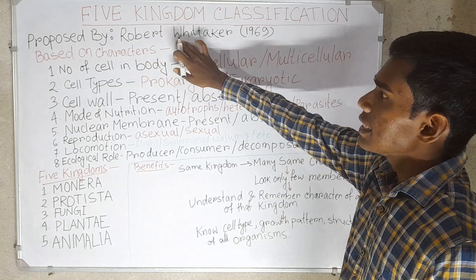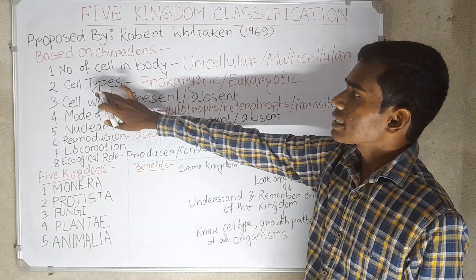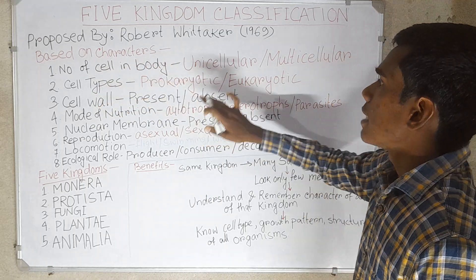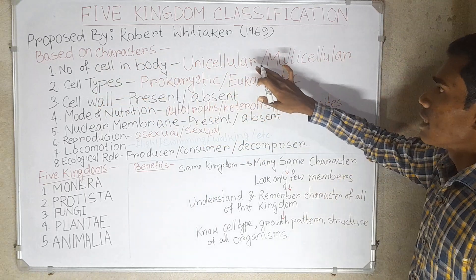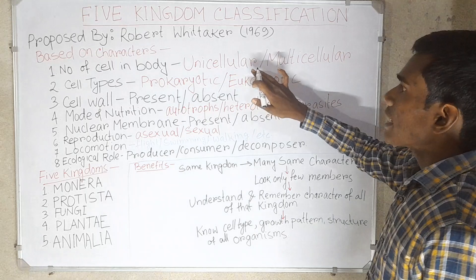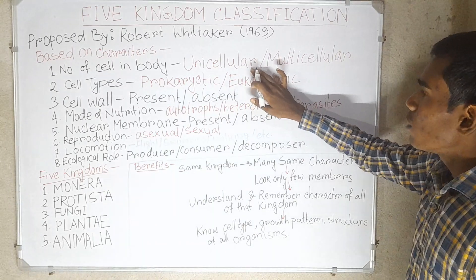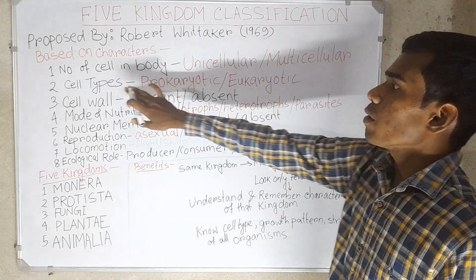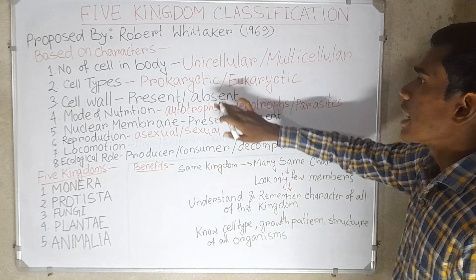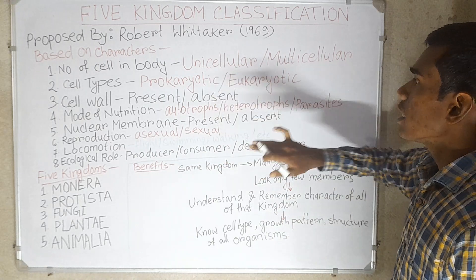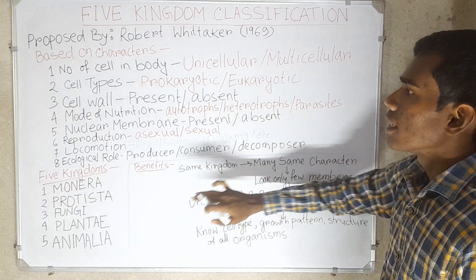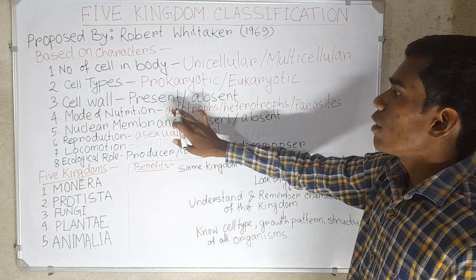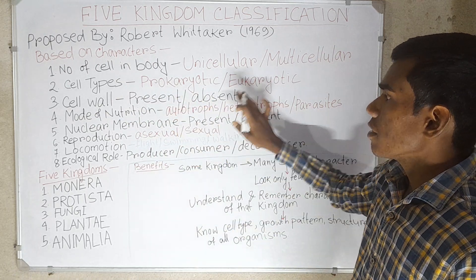The characters used are: number of cells in the body — that is, whether the organism is unicellular or multicellular — and type of cell, that is, whether the cell is prokaryotic or eukaryotic. Another character is the presence of a cell wall — whether a cell wall is present or absent.